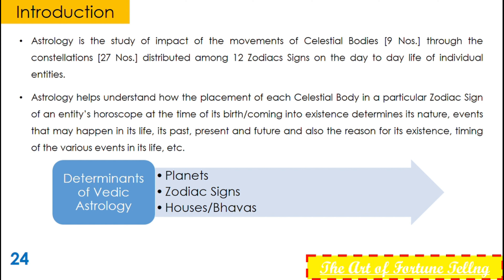Astrology helps us understand how the placement of each planet in a particular zodiac sign of an entity at the time of its birth or coming into existence determines its nature, events — past, present, and future — and also the reason for its existence and timing of various events.